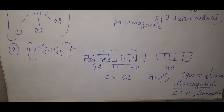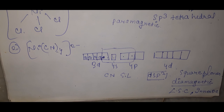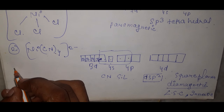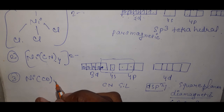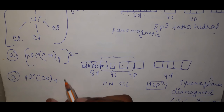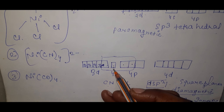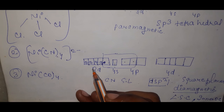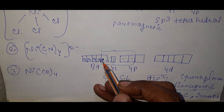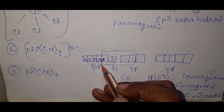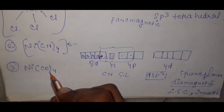Example 3: [Ni(CO)₄]. CO is also a strong ligand and will cause electron pairing. With 3d⁸ and the CO ligand causing pairing, the 3d orbitals become completely filled, and the hybridization uses 4s and 4p orbitals, forming a tetrahedral complex.